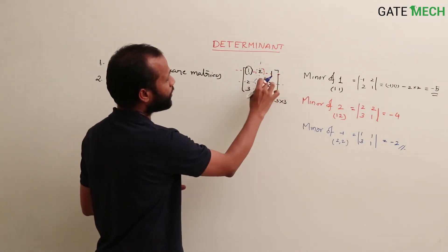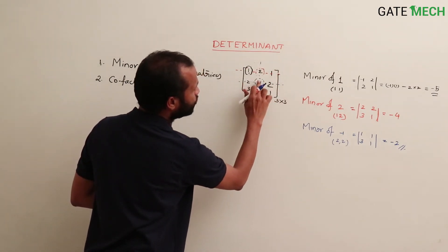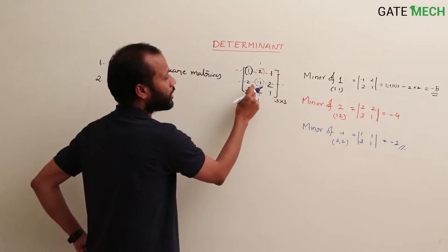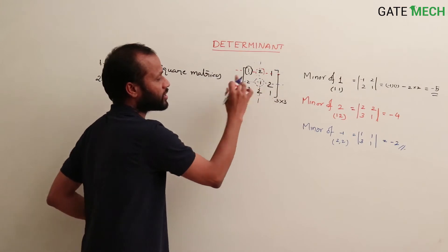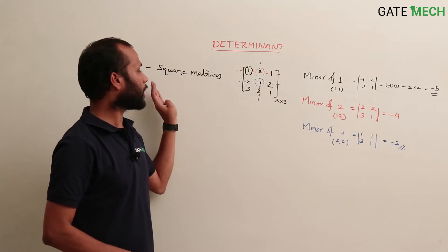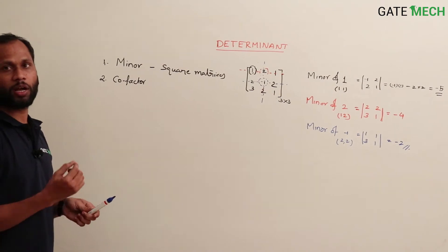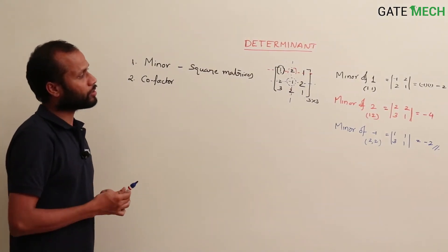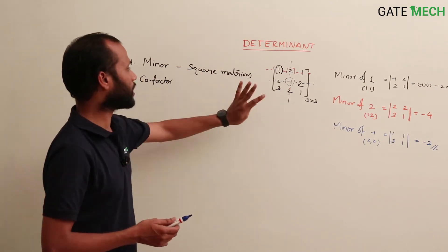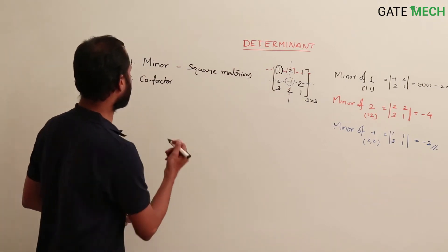Similarly, the minor of element at position (1,3): hide that row and column, and the remaining sub-matrix is 2, -1 / 3, 2. The determinant is (2)(2) - (-1)(3) = 4 + 3 = 7. For each element you calculate this way. Sometimes it's referred to as principal minor or first minor, but we can just call it minor for now.